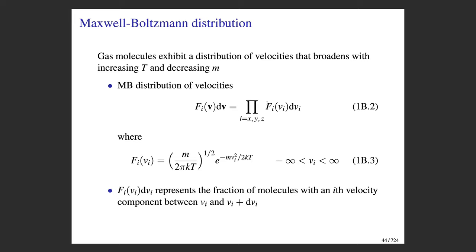We are multiplying the distribution of the x component of velocity times the distribution of the y component times the distribution of the z component. Each of those distribution functions is identical to one another because space is symmetric. The Maxwell-Boltzmann distribution of velocities is a probability distribution function representing the fraction of molecules with a velocity component between vi and vi + dvi. It's a Gaussian function — an exponential of the form e^(−v²) — which looks like a bell curve.